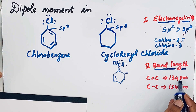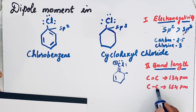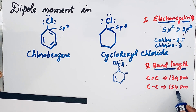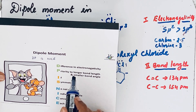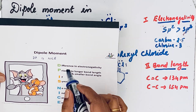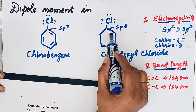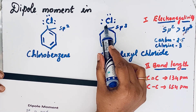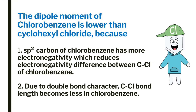For a C=C double bond, the bond length is 134 picometers, but for a C–C single bond it is 154 picometers. Since longer bond length leads to greater dipole moment, cyclohexyl chloride — with its C–C single bond — has the longer bond length. So these are the two reasons: greater electronegativity difference and longer bond length in cyclohexyl chloride.